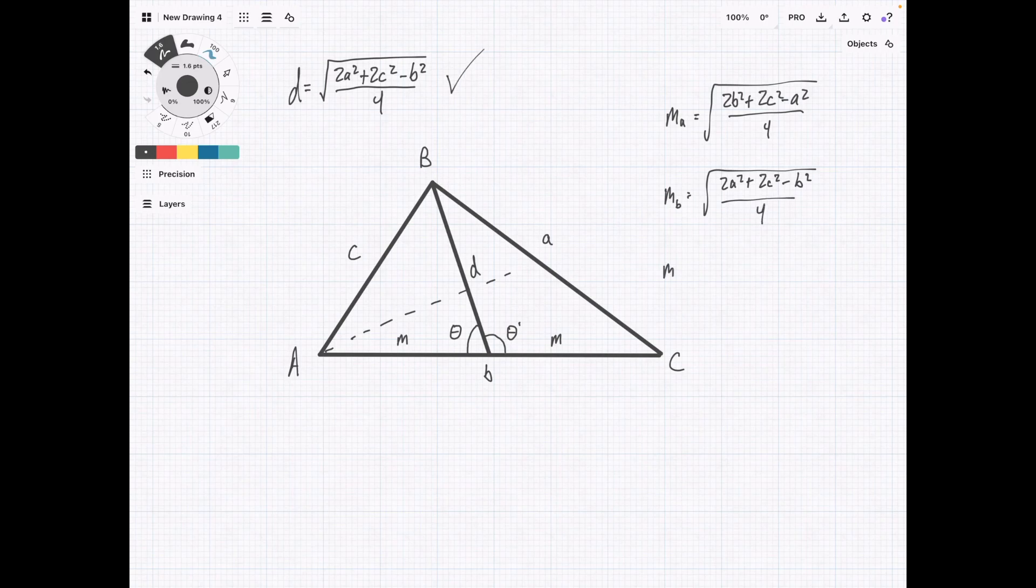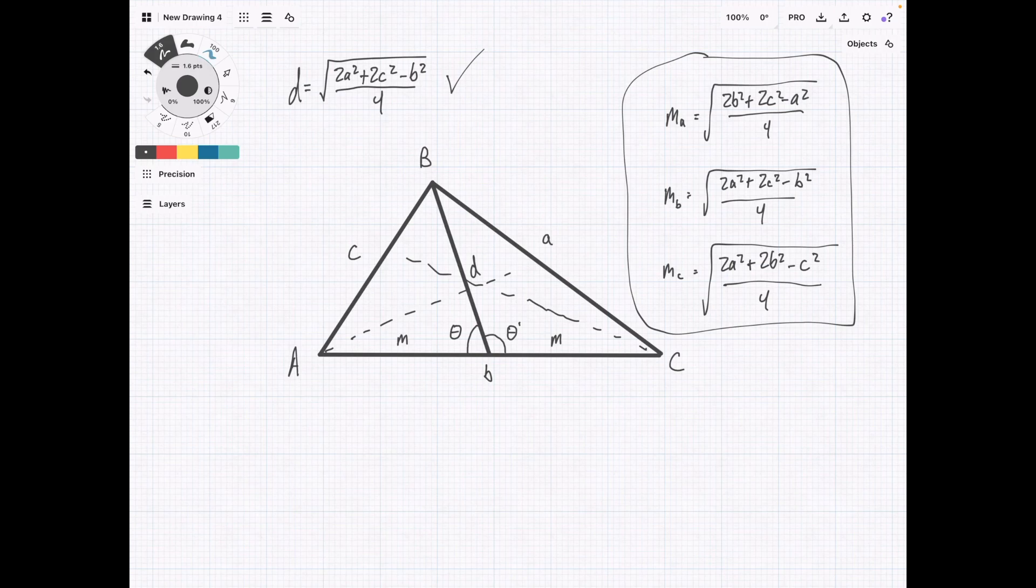And then mc, if we're deriving the median of this side, is going to be equal to square root of 2a squared plus 2b squared minus c squared over 4. So those are the general formulas you can use. So if you're looking for the median from a certain angle, then the side length is going to fit into this a squared term.